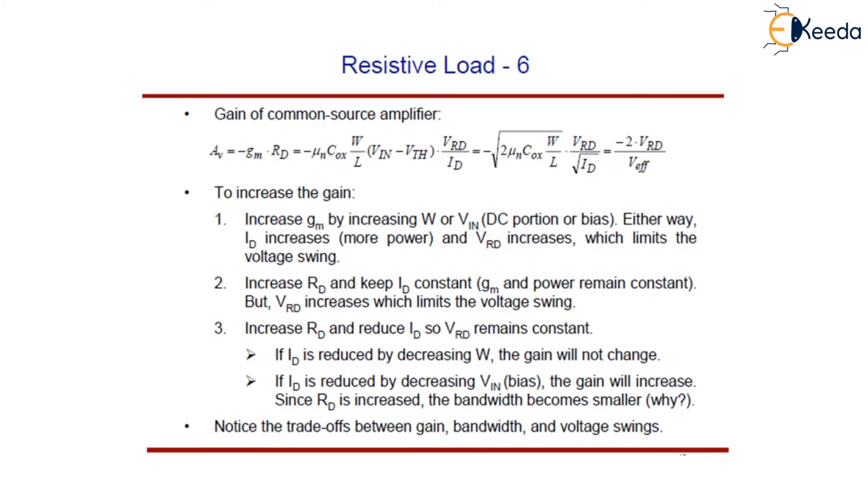If VrD remains constant, we can decrease Id, and then Rd must increase, thereby leading to a greater time constant at the output node. In other words, as we have discussed in the analog design octagon, the circuit exhibits trade-offs between gain, bandwidth, and voltage swing. Lower supply voltage further tightens these trade-offs. We have to understand which parameter to increase and which to decrease to meet our design specifications.